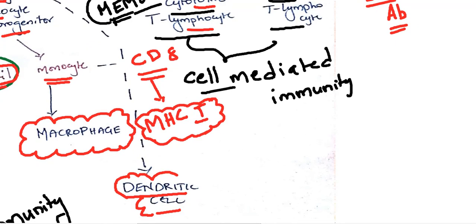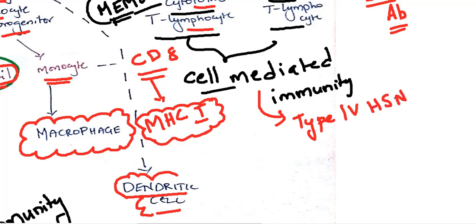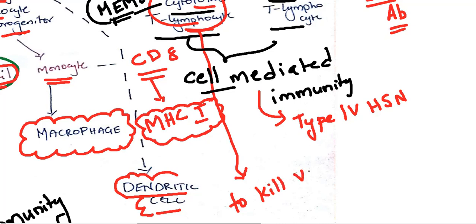As we already know, cell-mediated immunity is a type 4 hypersensitivity reaction. And the function of cytotoxic T lymphocytes is to kill virus-infected cells.